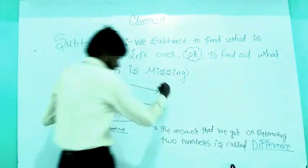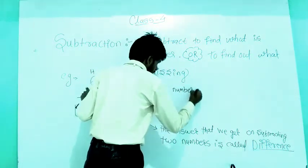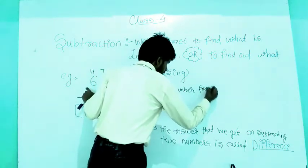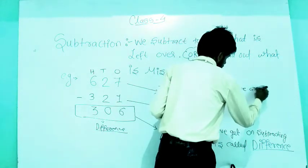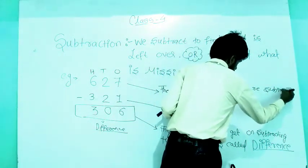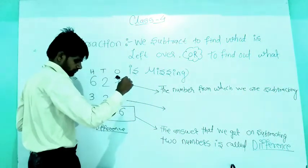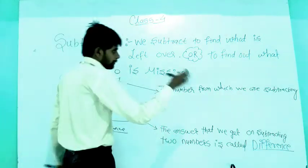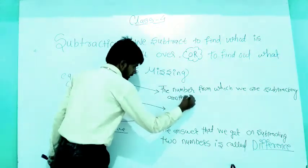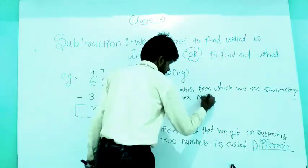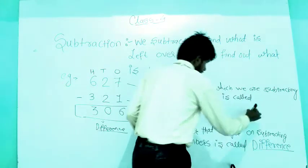The number from which we are subtracting another number is called the minuend. So the biggest number — the one you subtract from — its specific name is minuend.